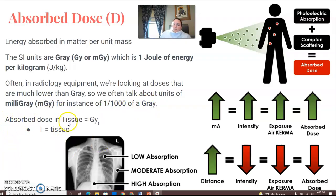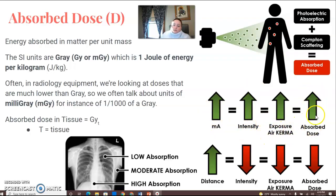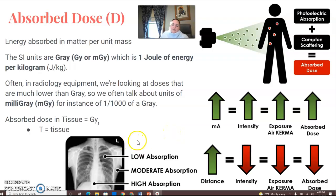Absorbed dose in tissue is denoted Gy with a subscript 't' for tissue. For your patient, photoelectric absorption and Compton scattering together equal the absorbed dose. When you increase mA, it increases intensity, increases exposure and air kerma, and therefore increases absorbed dose — so increasing mA increases patient dose. To reduce dose, you can increase distance, which lowers intensity, lowers exposure, and lowers absorbed dose. Absorbed dose in tissue varies based on tissue thickness and atomic number, with bone being high absorption, tissue moderate, and air low.